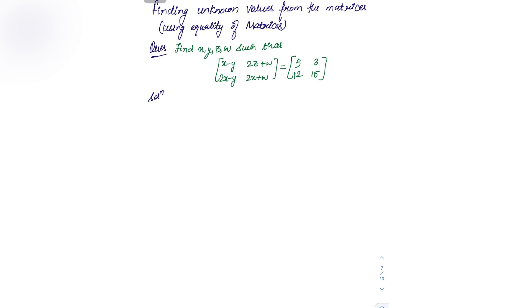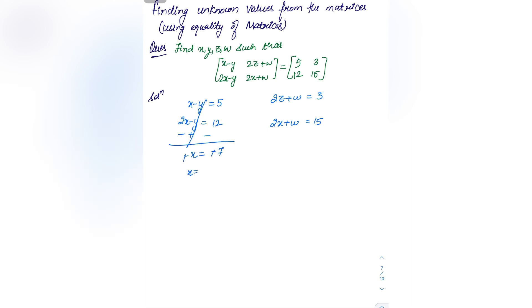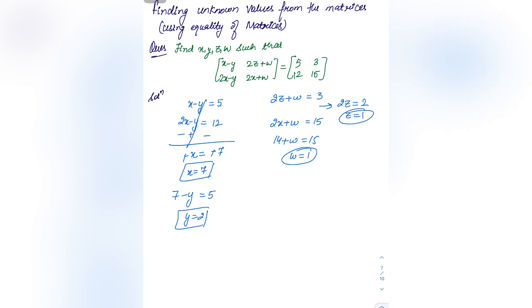Next is finding unknown values from matrices using equality. We need to find x, y, z, w such that two given matrices are equal. Comparing every element: x − y = 5, 2x − y = 12, 2z + w = 3, and 2x + w = 15. Subtracting: x = 7. From the first equation: 7 − y = 5, so y = 2. Substituting x in the fourth equation: 14 + w = 15, so w = 1. Substituting w: 2z = 2, so z = 1.